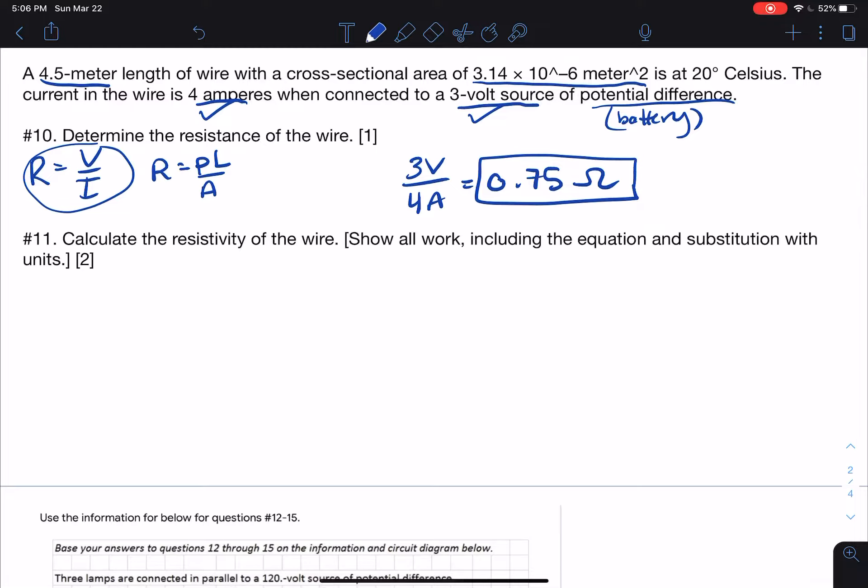Number 11 says calculate the resistivity of the wire, show all work, including the equation and substitution with units. So in this one, we want to use R equals ρL over A. Resistivity is this value here. Usually you look it up in the reference table, but it doesn't actually tell us the material. It doesn't say if it's copper. It doesn't say if it's silver. And it wants you to calculate it instead. So we're going to have to use this value here for my R.